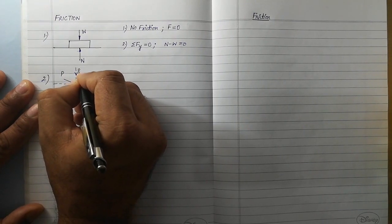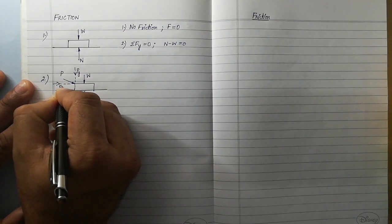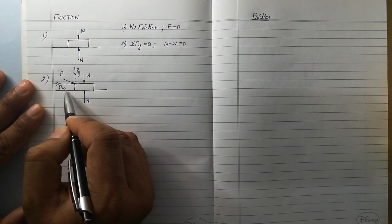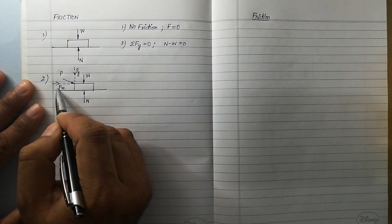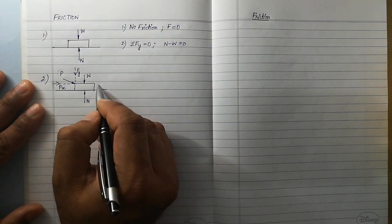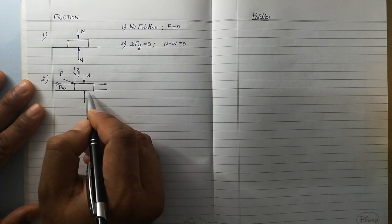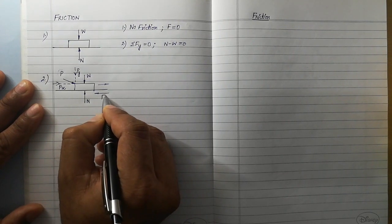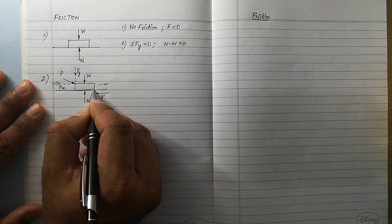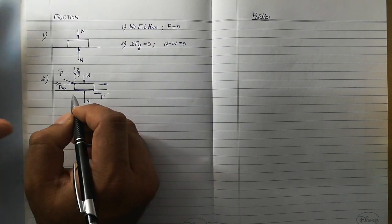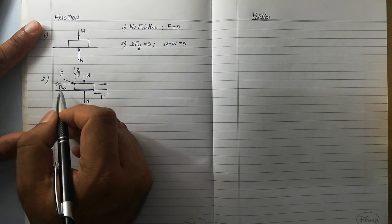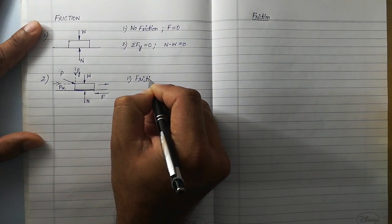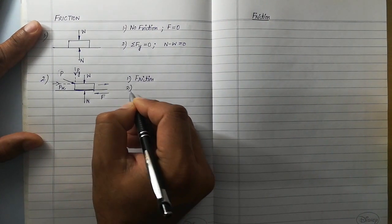Let us call these components Px (along the surface) and Py (normal to the surface). This force has one component along the surface, so the tendency of that component is to move the body towards the right. But suppose this body is not moving — why is it not moving? It means there is some friction developed between these two contacting surfaces which opposes the effect of the horizontal component of the force. So in this case we can say there is friction, and we have to consider two equations of equilibrium.